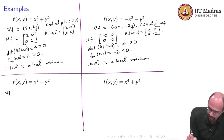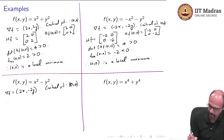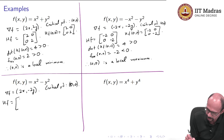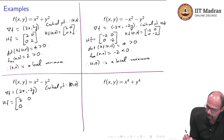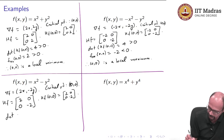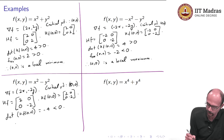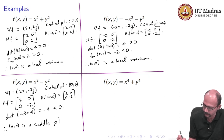For f(x,y) = x² − y², the gradient is (2x, −2y). Setting it to 0 gives the critical point (0,0). The Hessian is [2, 0; 0, −2]. The determinant is 2×(−2) − 0 = −4, which is negative. Once the determinant of the Hessian is negative in the 2×2 situation, we know immediately that this is a saddle point, which is indeed the case here.